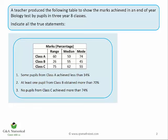The teacher has produced the following table to show the marks achieved in an end-of-year test from pupils across three different classes — A, B and C. They give you summaries for the range, the median and the mode, here given in percentages. Sometimes they might give you marks or something like that. We'll take the statements one by one, and yes, you do have to answer all three of them correctly to get the one point that's available.